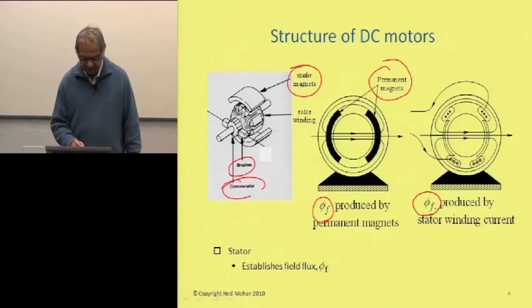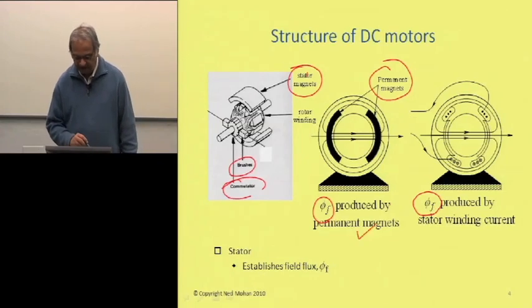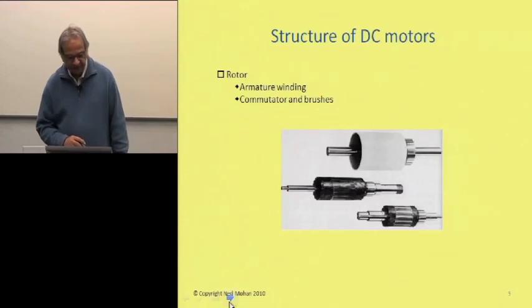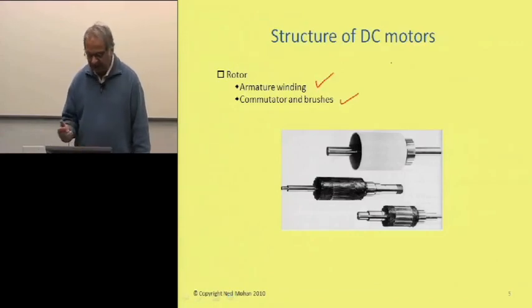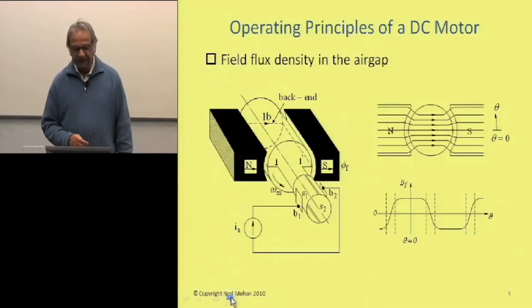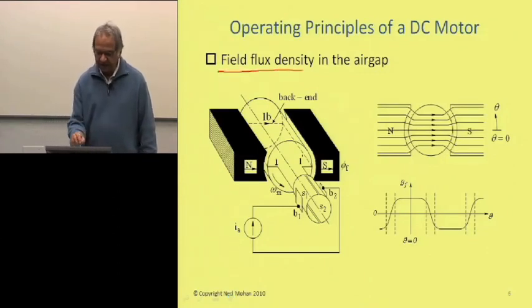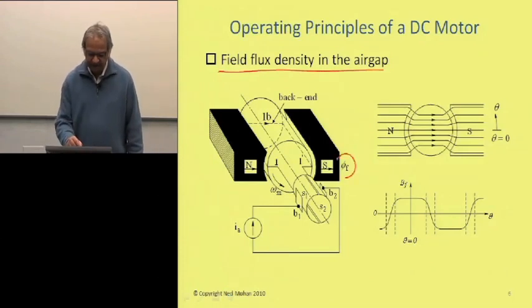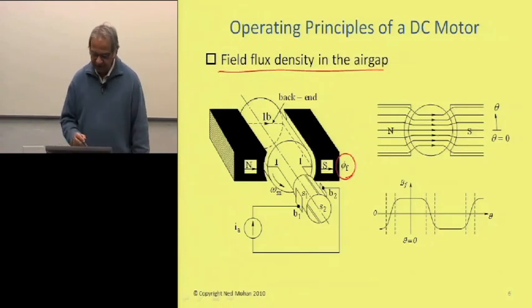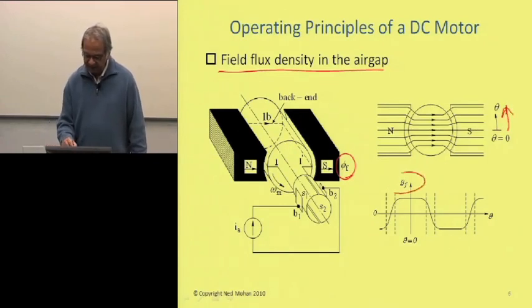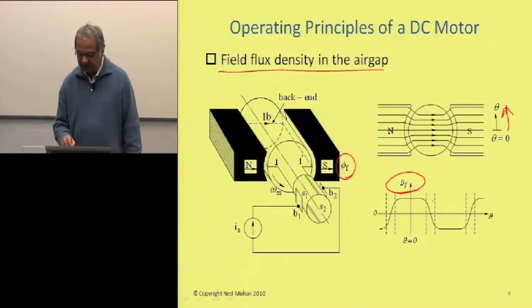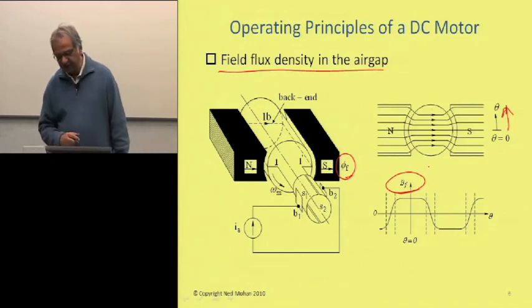There are two ways to produce this field flux, and by and large we look at this permanent magnet type DC machine. The rotor has armature windings, commutators, and brushes. For different applications this rotor may look different. Let's look at the basic principle: from the stator, the field flux density in the air gap is established — this is field flux phi sub f. Measuring theta from zero, we can plot this field flux density B sub f, which is pretty flat except at 90 and 270 degrees.